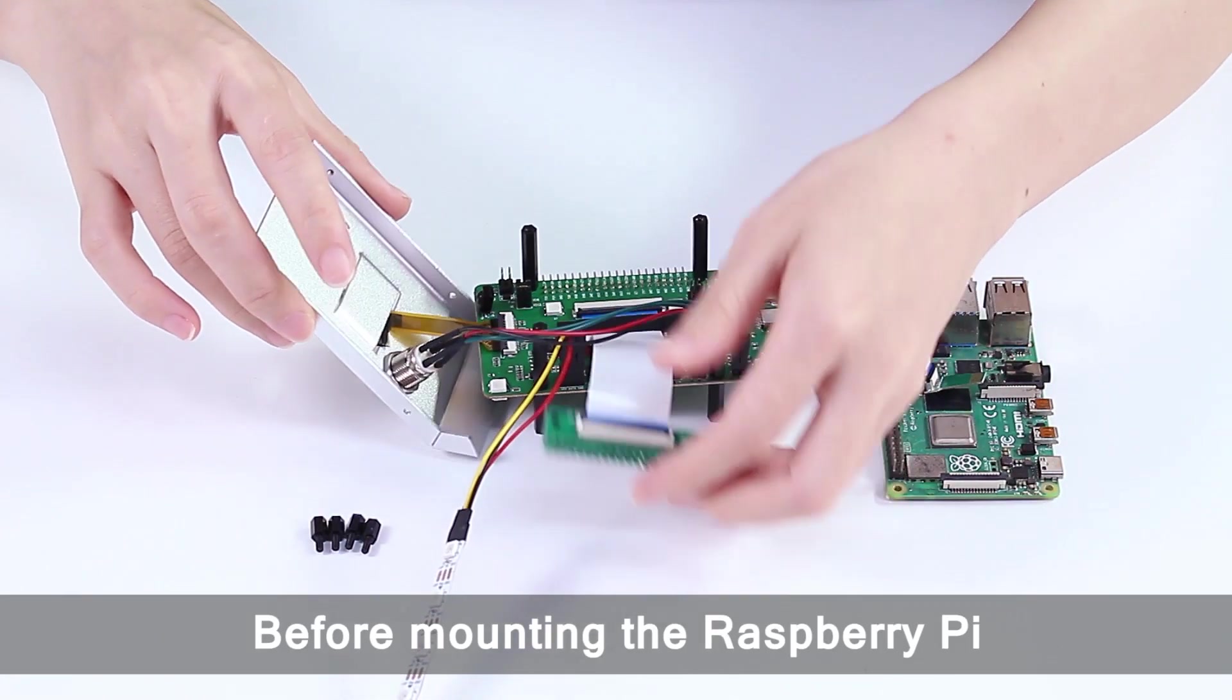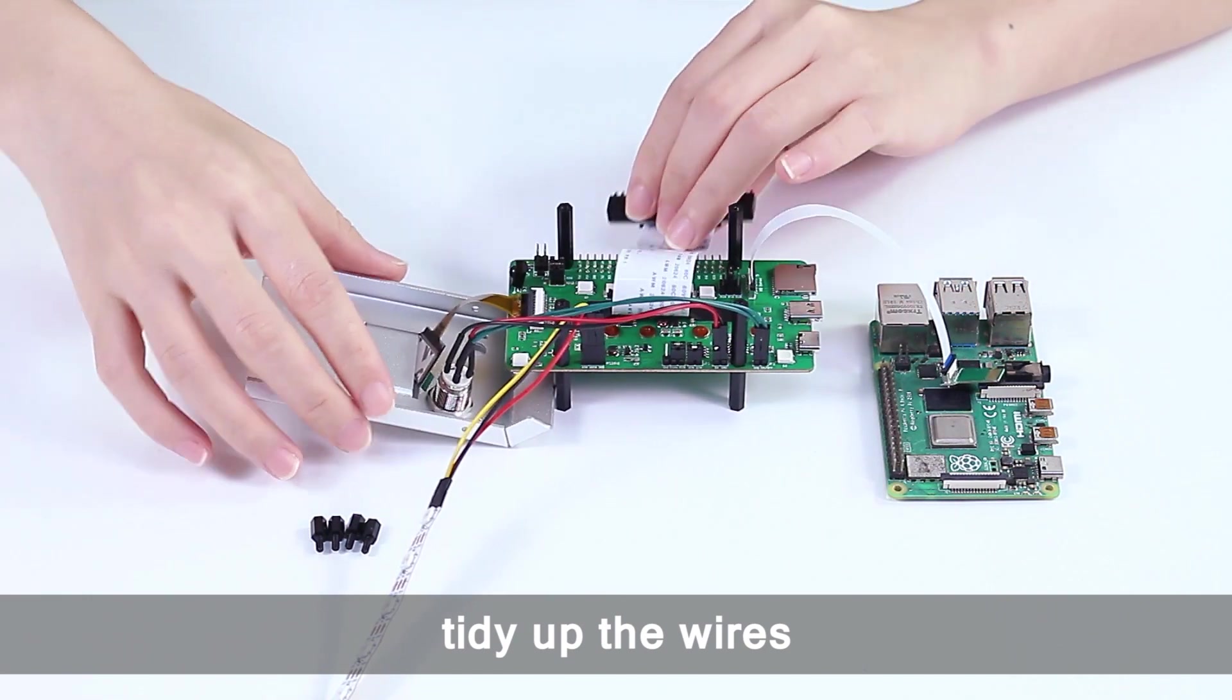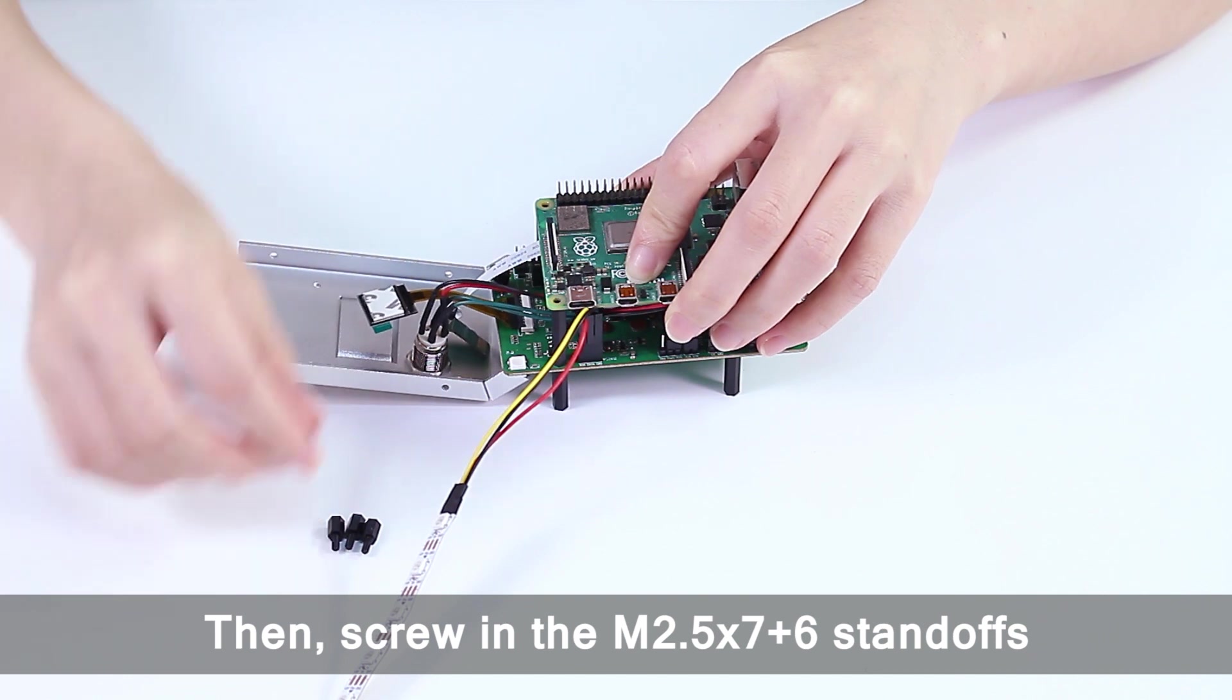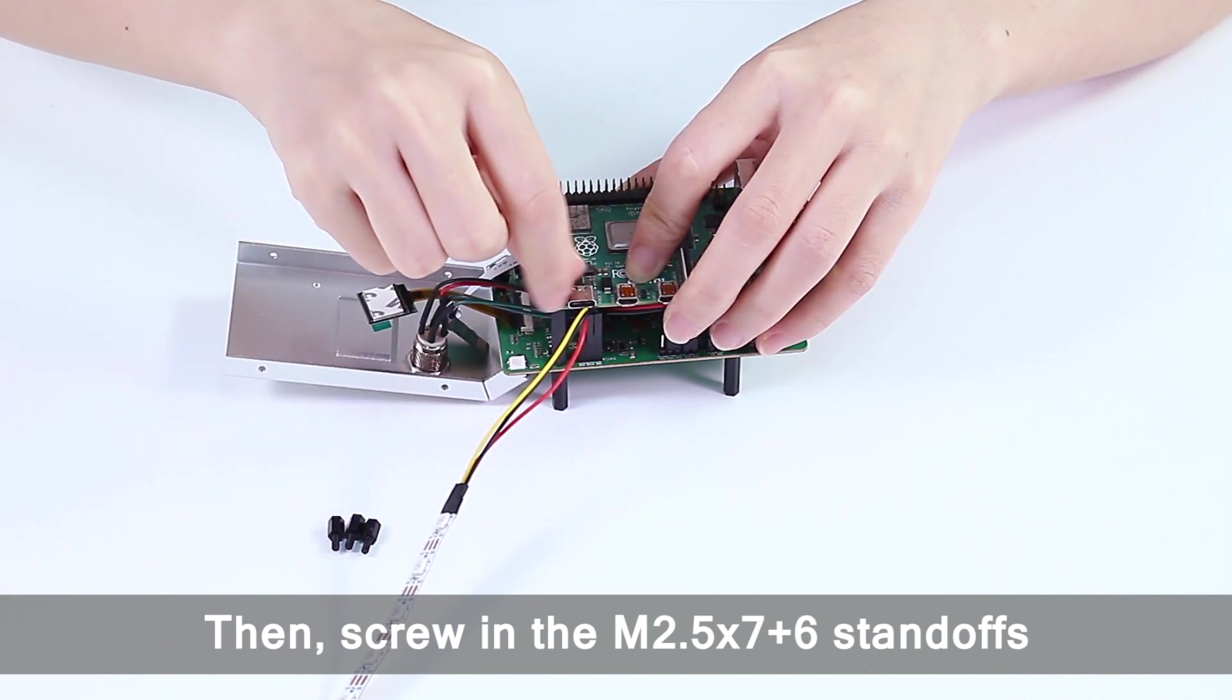Before mounting the Raspberry Pi, tidy up the wires. Then, screw in the M2.5x7 plus 6 standoffs.